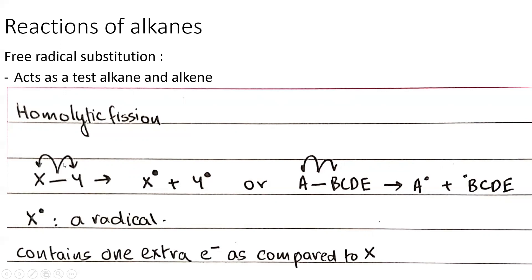This can happen if a molecule contains multiple groups A, B, C, D, E. If it splits between A and B, it produces an A radical and a B-C-D-E radical with a radical dot on B.